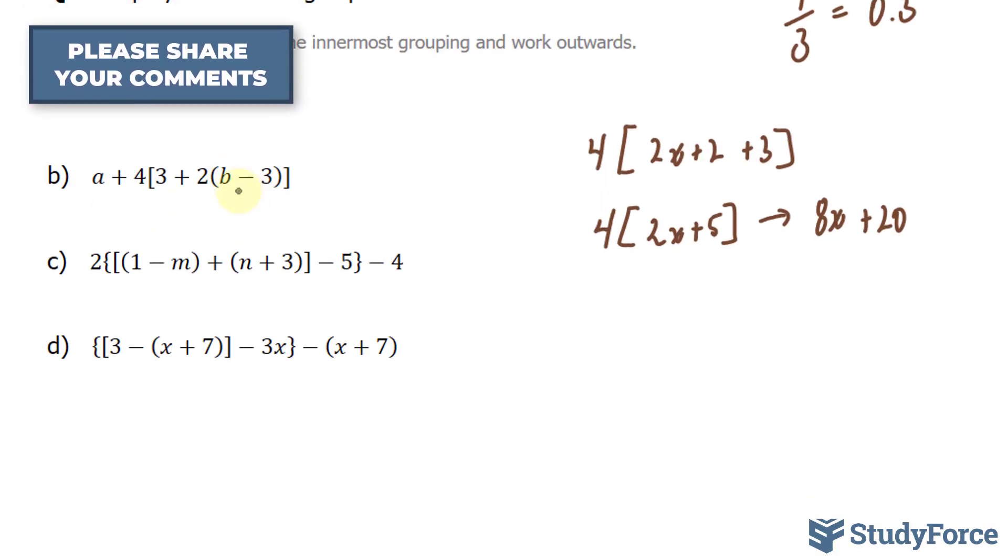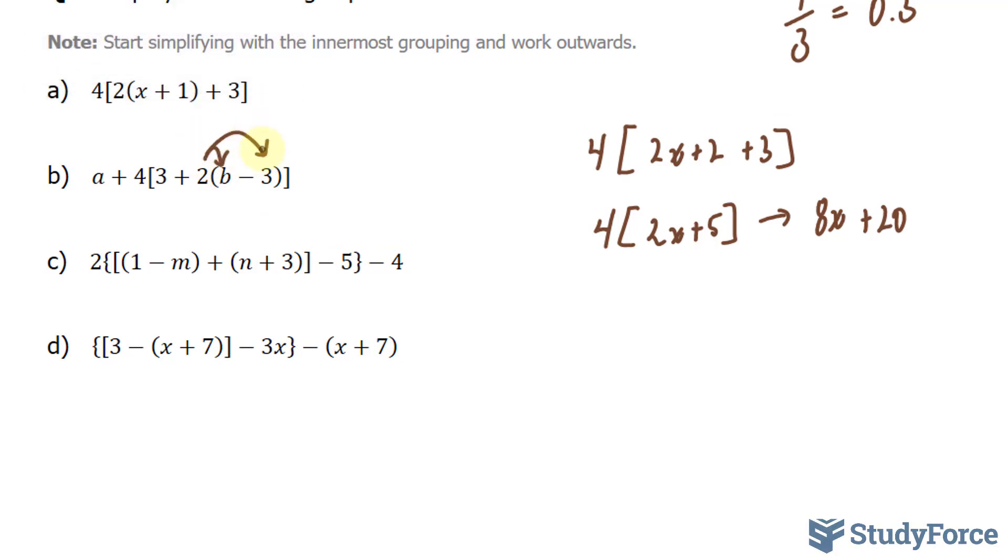For question B, once again, we'll start with the innermost: b - 3. Those can't be combined, so we will expand. This gives us a + 4[3 + 2b - 6].